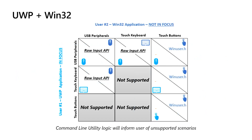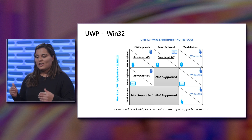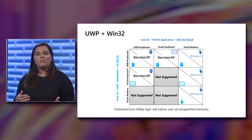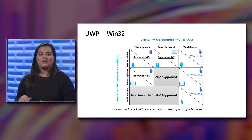Looking at the UWP and Win32 matrix, you can pick and choose supported scenarios and see which are unsupported. For example, if you use a Win32 application with a USB peripheral, you can't simultaneously use a UWP application with touch buttons — that solution is not supported. However, there are many other options for making touch buttons and USB peripherals work together. The utility manages focus for you since both applications will be in full screen, but the matrix also shows which application is in the foreground versus background.